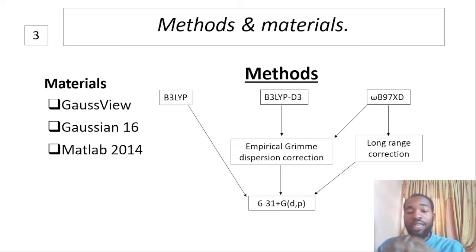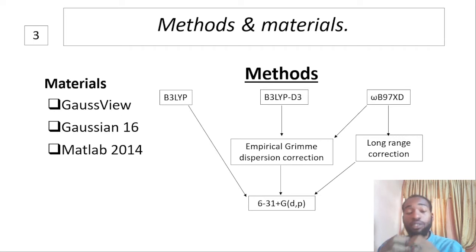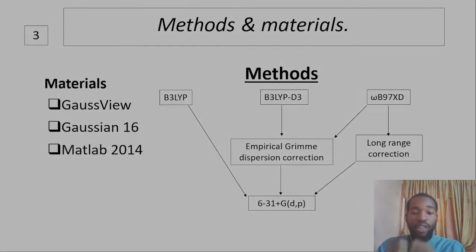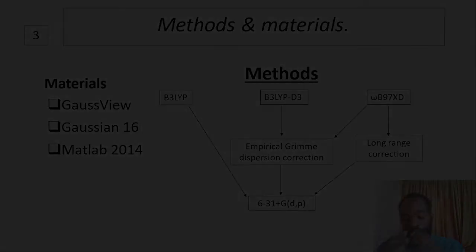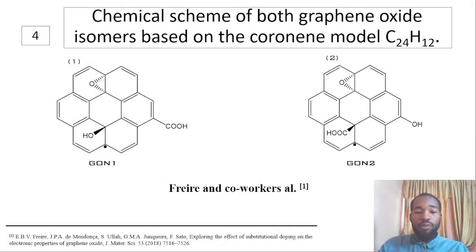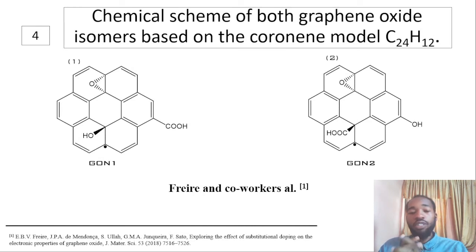Each job typically runs for 78 hours on 24 processors and generates approximately 50 megabytes of data. Two chemical systems of graphene oxide nanosheets, namely GON1 and GON2, were studied.